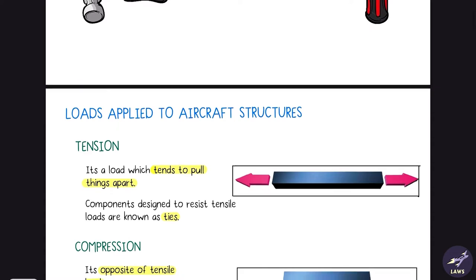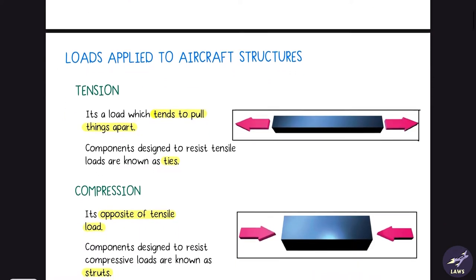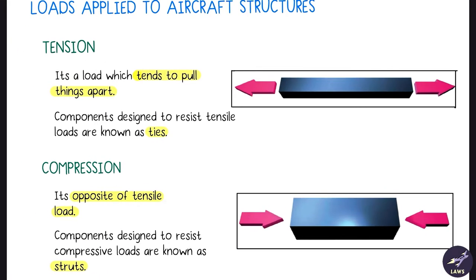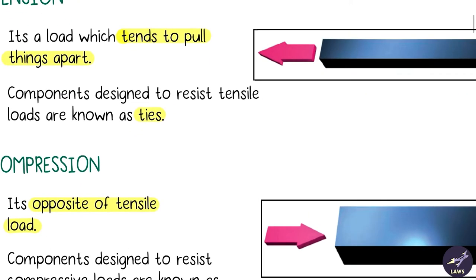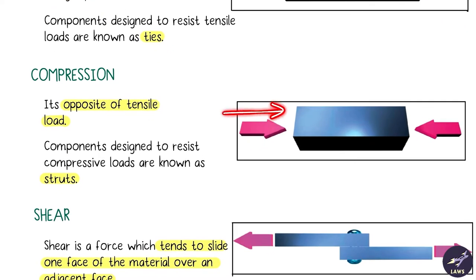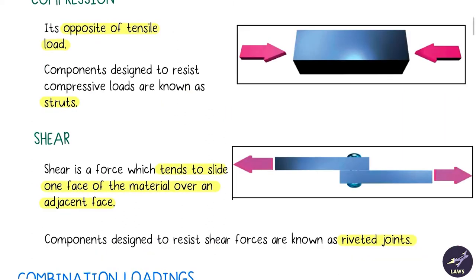Firstly, we'll look at loads applied to aircraft structures. We have tension, which tries to pull your structural member apart like this. The structural component used to resist tensile loads are known as ties. Next is compression, the opposite of tension. The load will act inwards. The component designed to resist it is known as a strut, used in case of a landing gear.